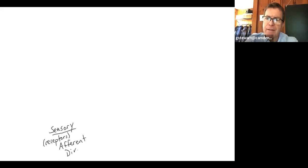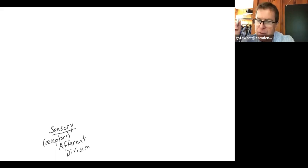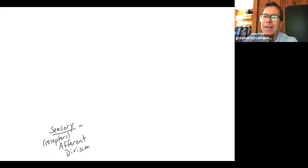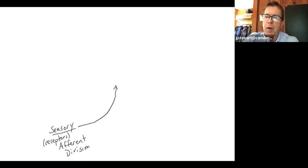The correct pronunciation is afferent — sometimes I say 'afferent' because my neurobiology instructor always said it that way, so that got tattooed on my brain. Sensory receptors sense a change in the environment and send signals to our central nervous system. These sensory receptors and the nerves taking signals toward the central nervous system are part of the peripheral nervous system, or PNS.